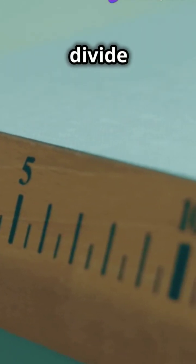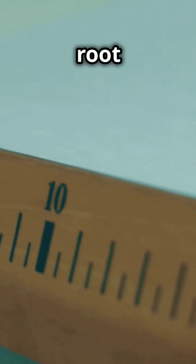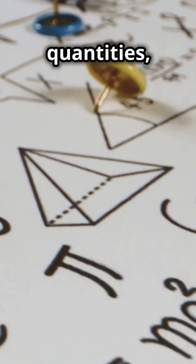To find uncertainty in the mean, divide absolute uncertainty by the square root of the number of measurements. For derived quantities, apply the relevant rules.